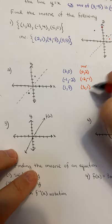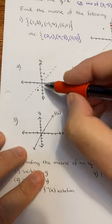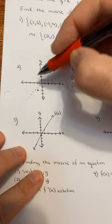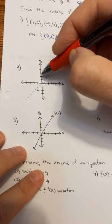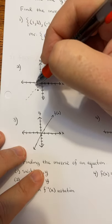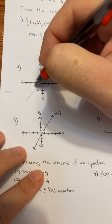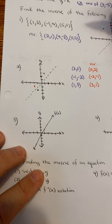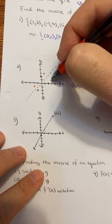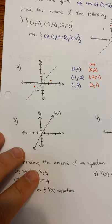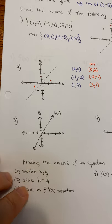So we graph those. (0, 2) is right here — notice it's just a reflection of that point. (-2, -1) is right here — reflection of that point. And then (3, 1) right here. These two are reflected across that line y equals x. It's that simple.